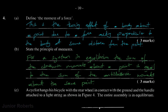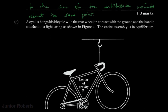Continuing, the question describes a cyclist hanging his bicycle with the rear wheel in contact with the ground and the handle attached to a light string as shown in figure four. The entire assembly is in equilibrium — pay close attention to that word.